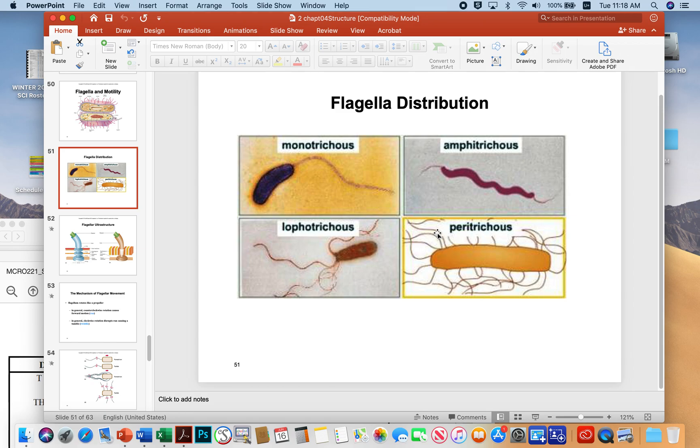Peritrichous is when you have a bunch of filaments all around the cell. The entire periphery of the cell is full of flagella. So monotrichous, just a single polar flagellum. Lophotrichous, a group of polar flagella. Amphitrichous, one on each end. And peritrichous, all around the cell.